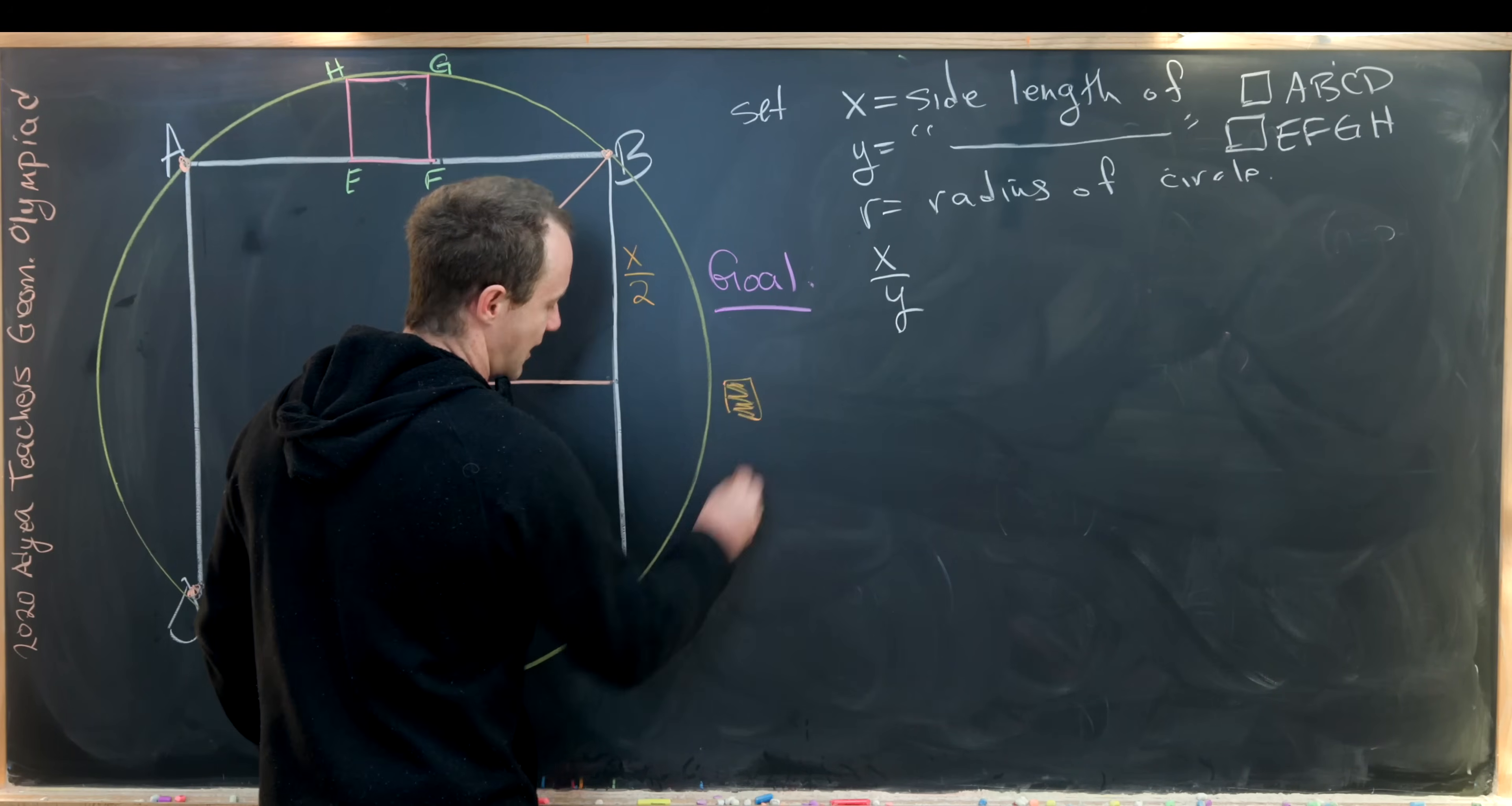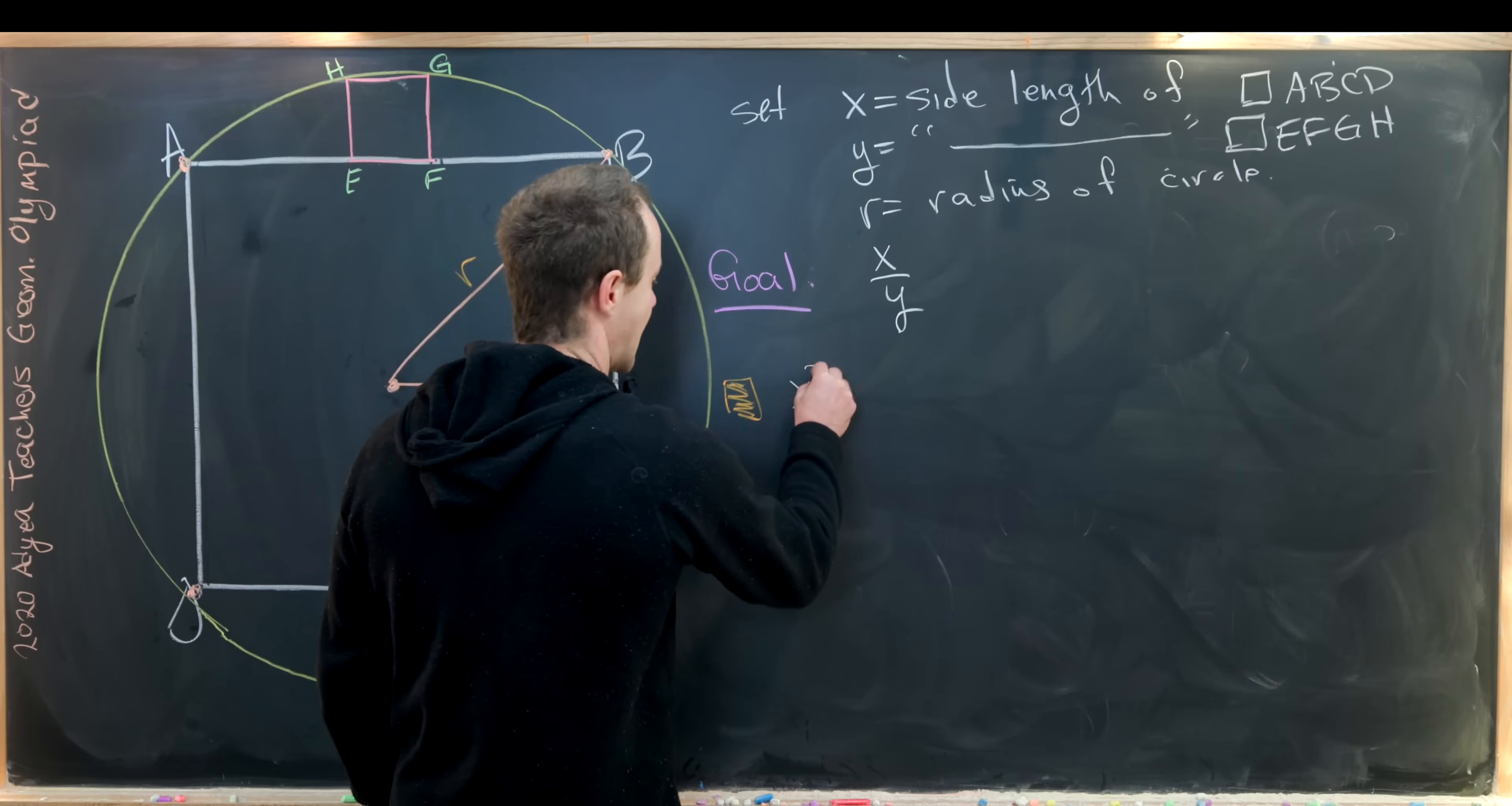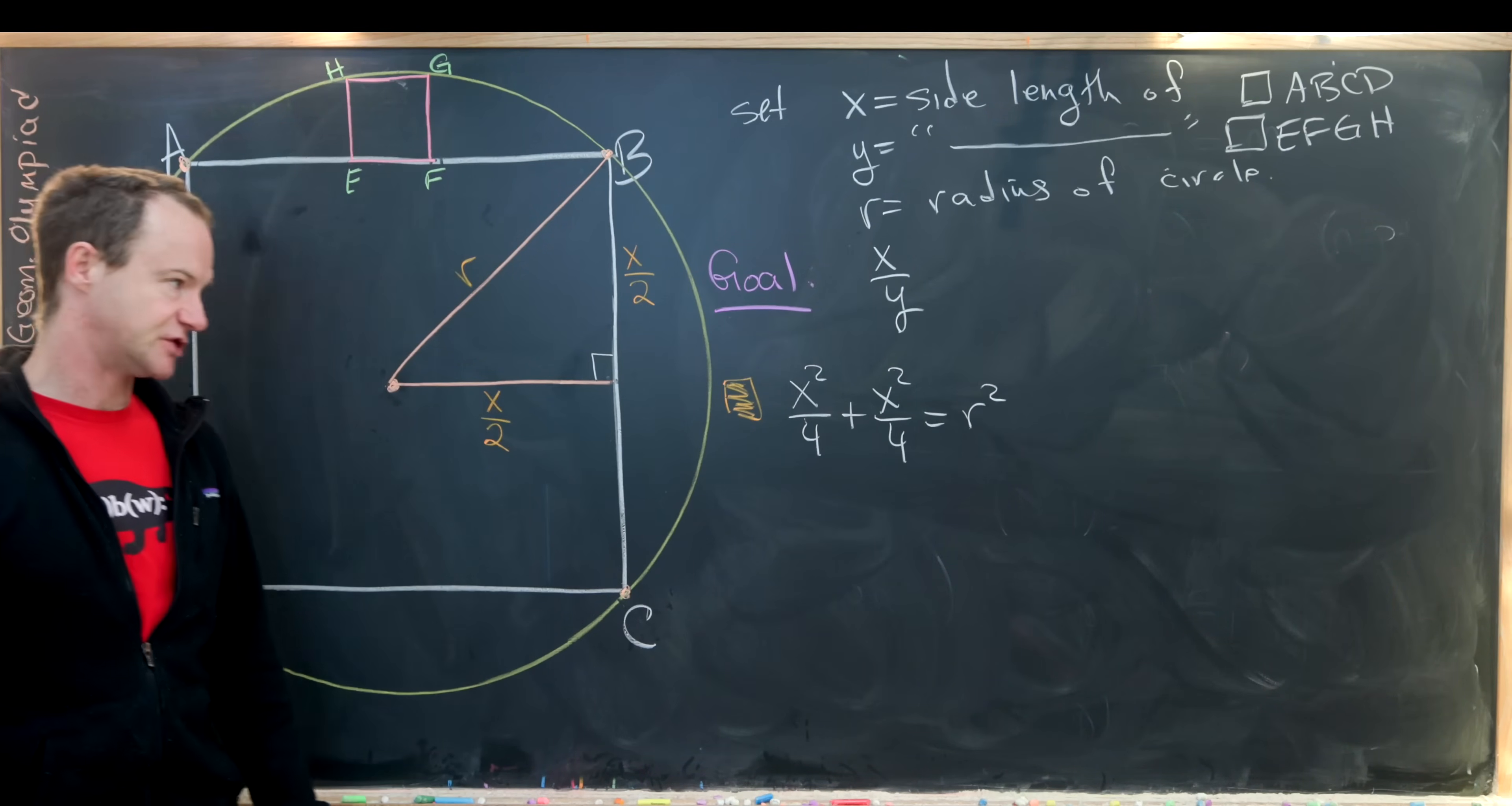From this picture, which maybe I'll put like an orange dot to say we're making a calculation from this picture and the Pythagorean theorem given that this is a right angle, we have X squared over 4 plus X squared over 4 equals R squared. That's because it's X over 2 quantity squared plus X over 2 quantity squared.